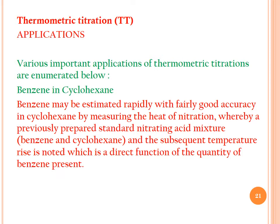Now we discuss applications of TT. One important application is the determination of benzene in cyclohexane. Benzene is a very toxic compound; even at 2 ppm it is carcinogenic. Benzene may be estimated rapidly with fairly good accuracy in cyclohexane by measuring the heat of nitration, whereby a previously prepared standard nitrating acid mixture is added to the benzene-cyclohexane sample and the subsequent temperature rise, which is a direct function of the quantity of benzene present, is noted.